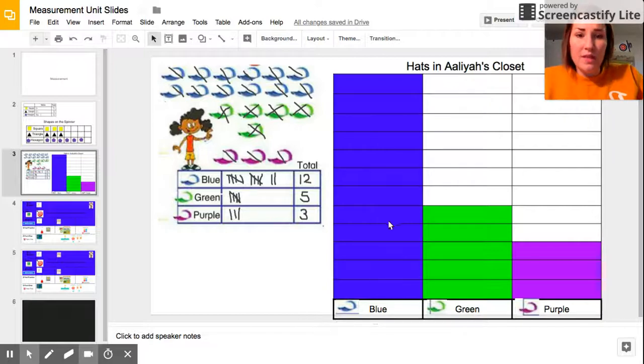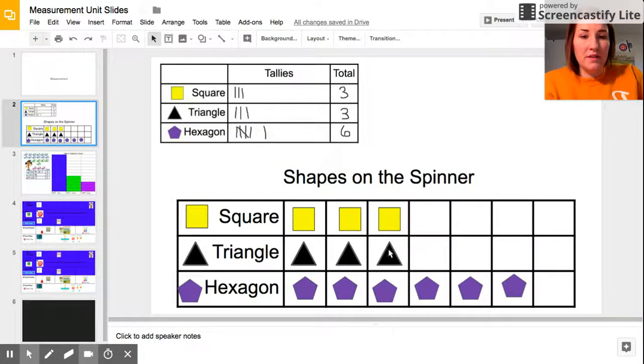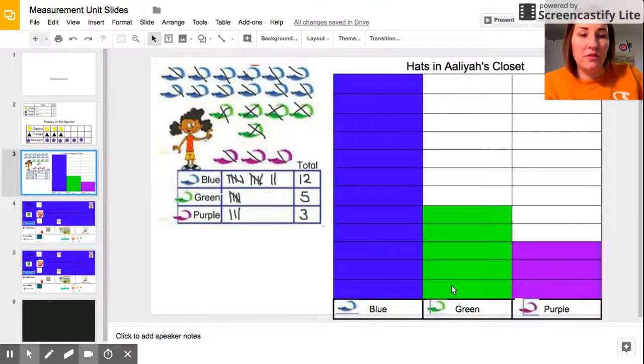You can see that it's really easy for us to see which one had the most, which one had the least. We can also compare like how many more blue versus how many green. A couple of things to keep in mind as you're doing this on your own: you need to make sure you're starting at the very bottom of your graph, or if it's going horizontally or across, that you're starting at the very first one next to your labels. Make sure that you're filling them in carefully and not skipping any, and also making sure that you are filling in the correct amount that matches your tally chart.